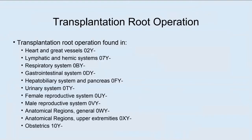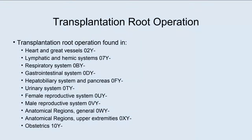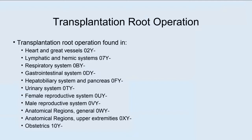Where are you going to see the root operation transplantation in PCS? It appears in: heart and great vessels, lymphatic and hemic systems, respiratory system, gastrointestinal system, hepatobiliary system and pancreas, urinary system, female reproductive, male reproductive, anatomical regions general, anatomical regions upper extremities, and obstetrics. These are the only body systems that include transplantations.